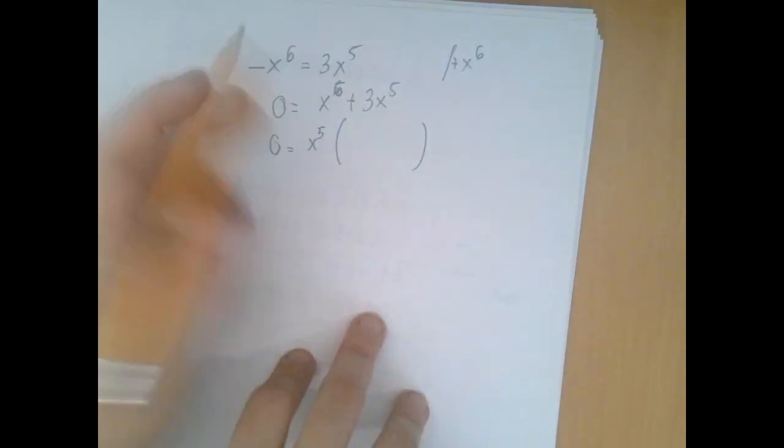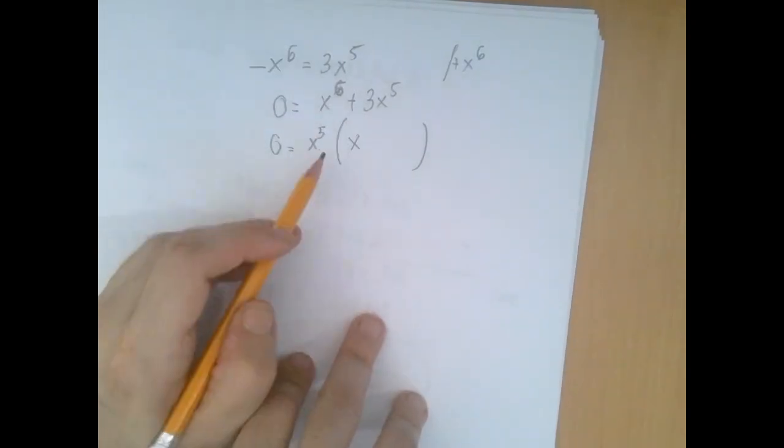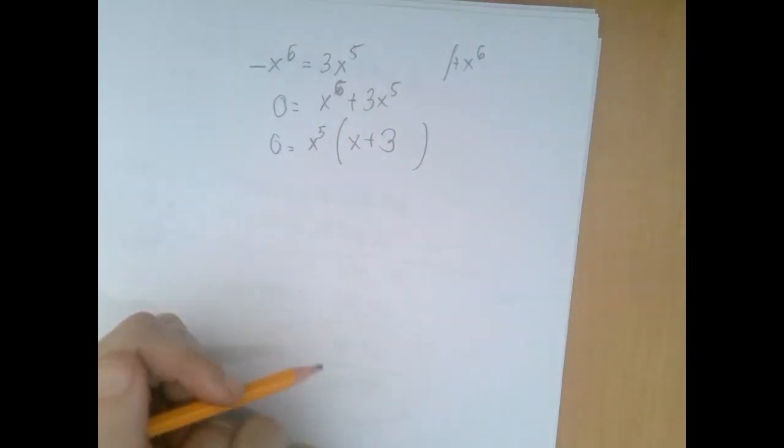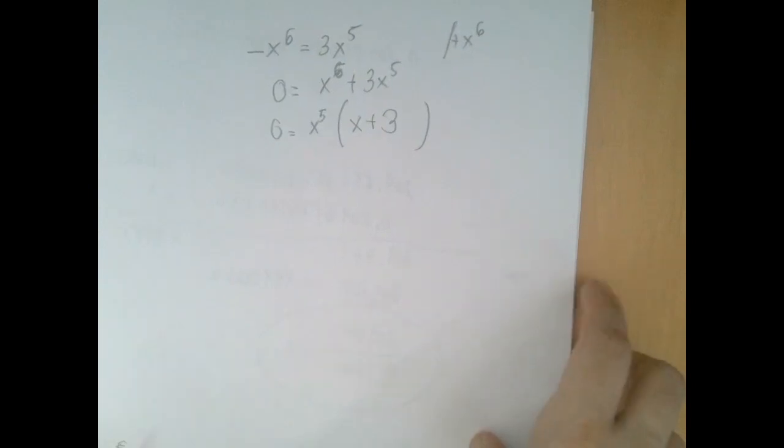And x to the fifth times x will give us x to the sixth, and x to the fifth times three will give us three x to the fifth power. So now we factored the right-hand side.